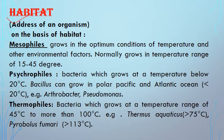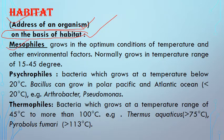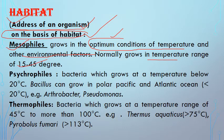Habitat is the place where an organism lives — the address of an organism. On the basis of habitat, bacteria are divided into different categories. The first category is mesophiles — 'meso' means moderate or normal. These are bacteria that live or grow in optimum temperature conditions, in the range of 15 to 45 degrees Celsius. Most bacteria are mesophiles and grow in normal environmental conditions.